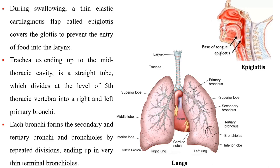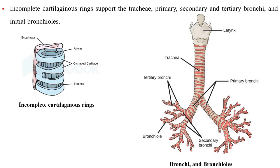During swallowing, a thin elastic cartilaginous flap called the epiglottis covers the glottis to prevent the entry of food into the larynx. The trachea, extending up to the mid-thoracic cavity, is a straight tube which divides at the level of the fifth thoracic vertebra into the right and left primary bronchi. Each bronchus forms secondary and tertiary bronchi and bronchioles by repeated divisions, ending in very thin terminal bronchioles. Incomplete cartilaginous rings support the trachea, primary, secondary, and tertiary bronchi and initial bronchioles.